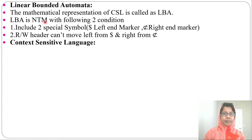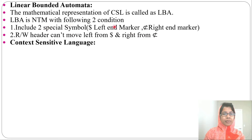We already designed non-deterministic Turing machines — Linear Bounded Automata looks the same as a non-deterministic Turing machine. But in LBA we are using two different symbols for the left-hand marker and for the right-hand marker, whereas in a non-deterministic Turing machine we simply use blank for both left and right boundaries. In LBA, we cannot move left from the left-hand marker and cannot move right from the right-hand marker.